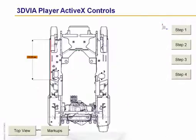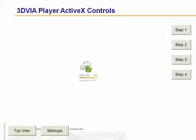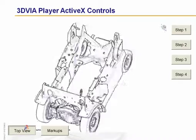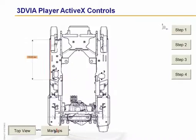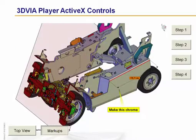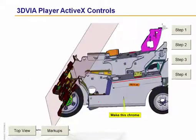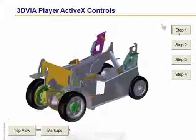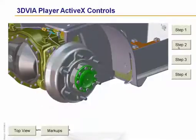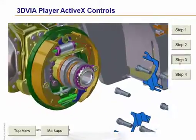If we go ahead and start the player again with these extra buttons, we have our top view that we originally created, we have a Markups view, and of course I can click on Step 1 and run the Marker Sequence, or Step 2, or Step 3, and so on.